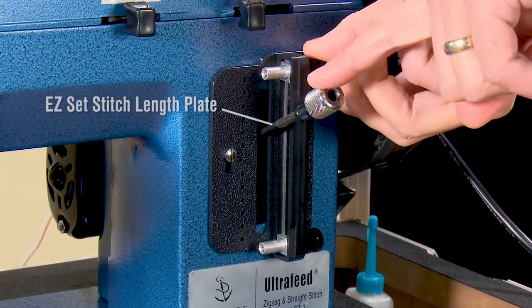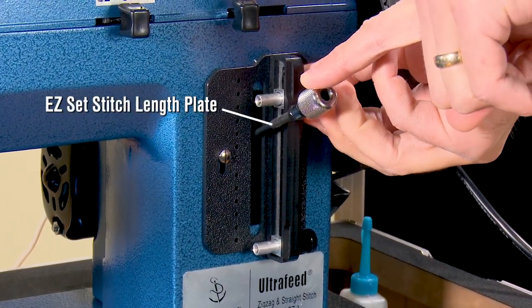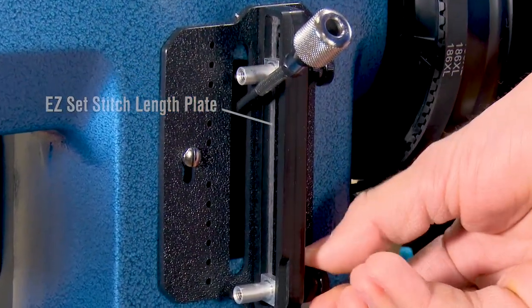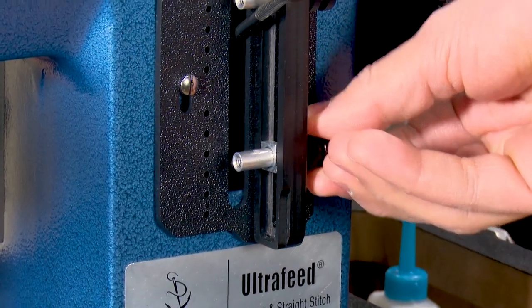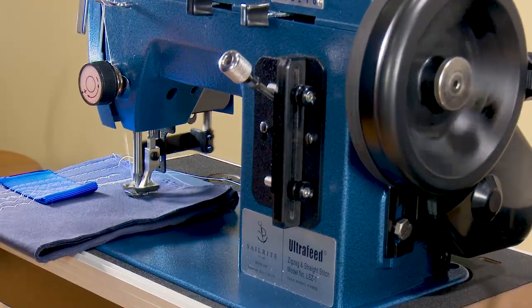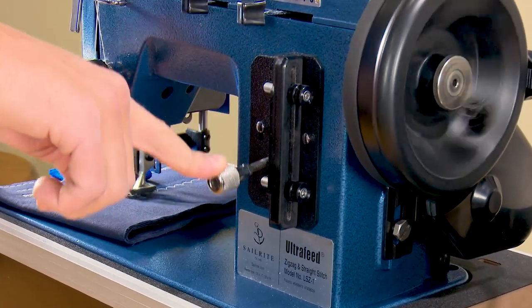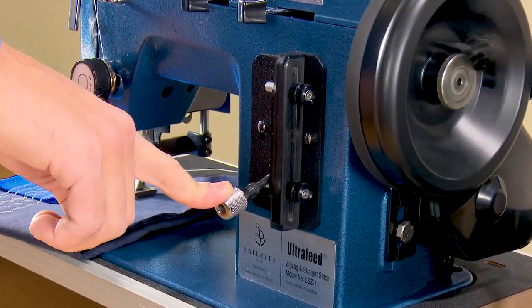The Ultrafeed sewing machines including the Plus Package come with the Easy Set Stitch Length plate. Set the stitch to your desired length by using the thumb screw stop. Now your stitch length in both forward and reverse is set for your project's requirements.